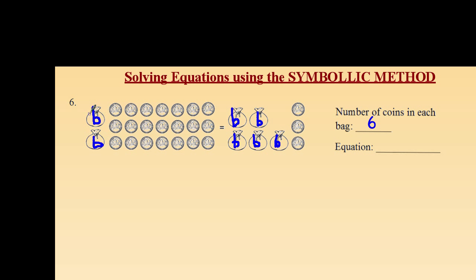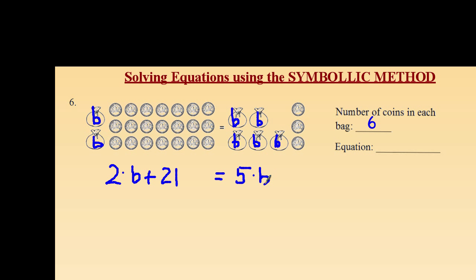By doing this, I can represent the two bags as 2 times b, or 2b. 2b represents the total number of coins in those two bags. I then write the addition sign because I'm adding that to 21 visible coins. I put my equal sign, and on the right side, since I have 5 bags, I write 5 times b, or 5b. And since I'm adding 3 coins to that, I write plus 3. So the equation we're solving is 2b + 21 = 5b + 3.